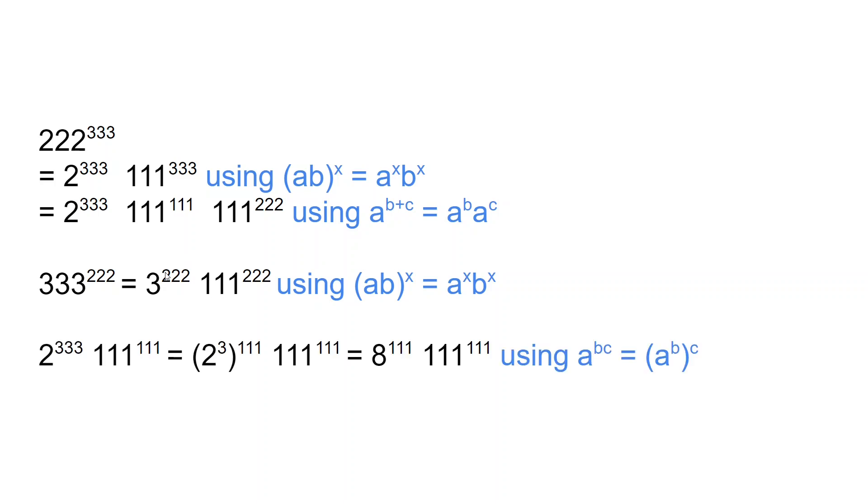Now if we break down the first term using this identity, we have 8 to the power of 111 times 111 to the power of 111. For the second term using this identity, we can break it down like so. Now it is very clear that the first term is greater than the second term.